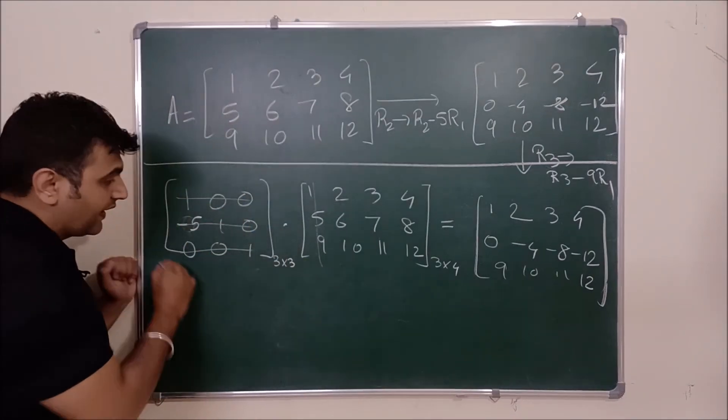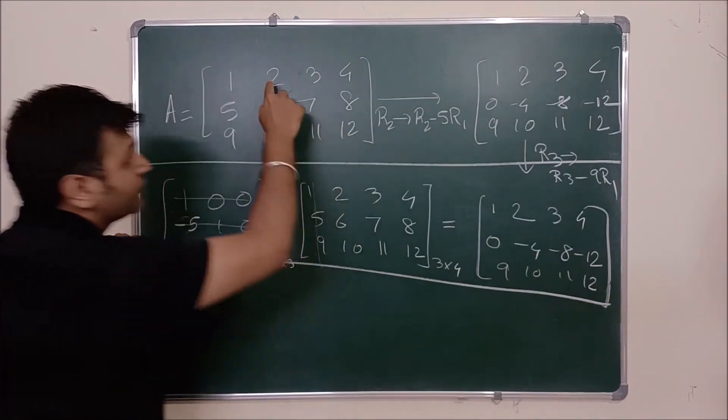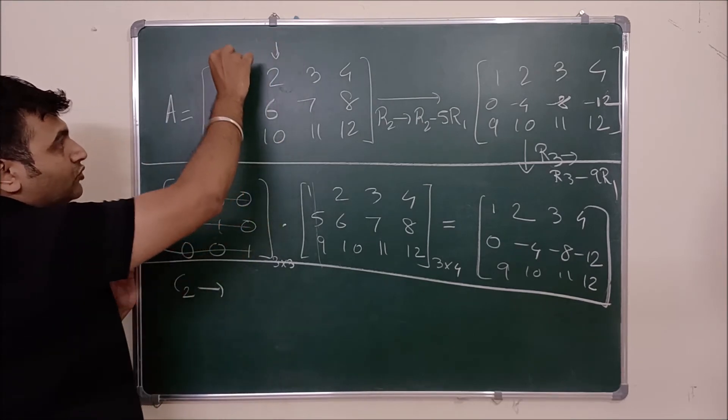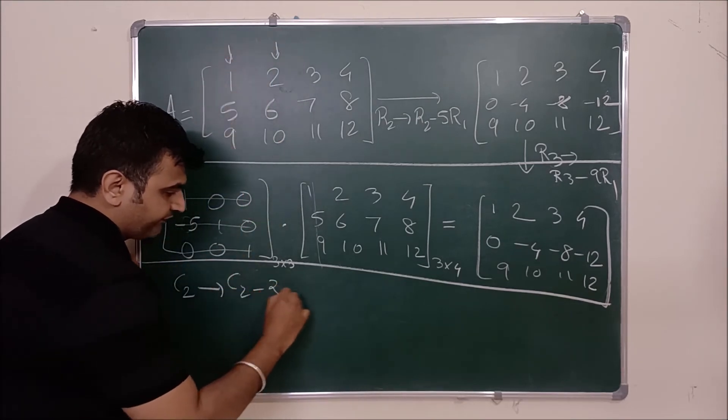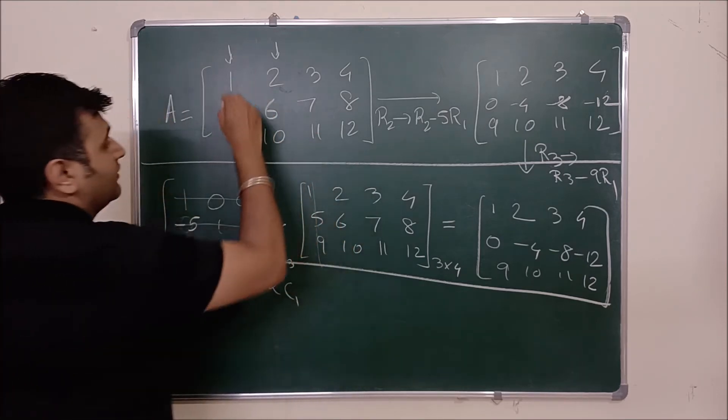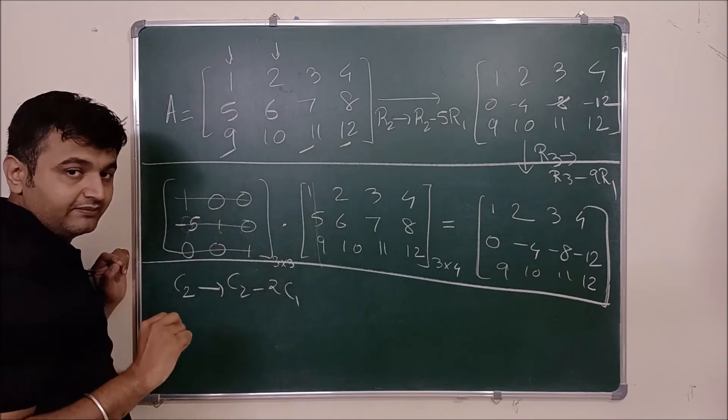Suppose this is a matrix A. I want to do suppose second row. I want to do C2 second column C2 minus 2 times C1. This is the operation I am doing. So what will I get? So my first third and fourth column will remain same.